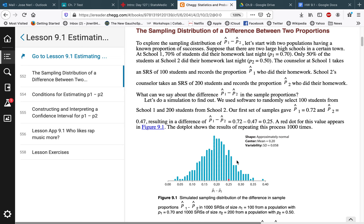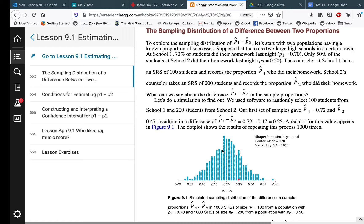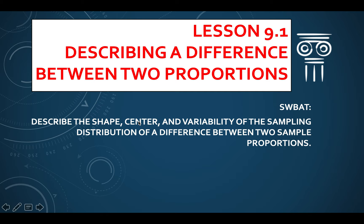One key thing to note: one school had 100 simple random samples and the other had 200, and from these we found p̂₁ and p̂₂. At the end of this lesson you should be able to describe the shape, center, and variability of the sampling distribution of the difference between two sample proportions — using two proportions, subtracting them, and observing what happens.